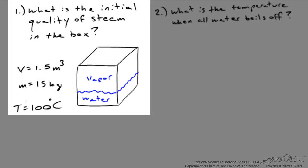This question asks us what is the initial quality of steam within this box? It's a rigid box that contains water and water vapor in equilibrium. The volume of the box is 1.5 cubic meters. The total mass within the box is 15 kilograms, and the temperature of the two in equilibrium is 100 degrees C. So what is the initial quality of steam in the box?